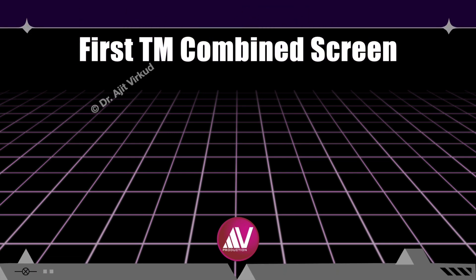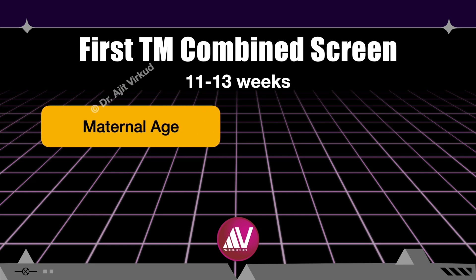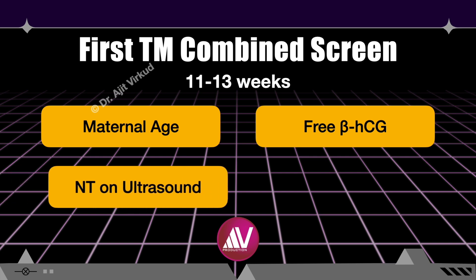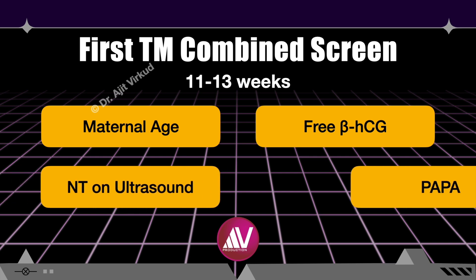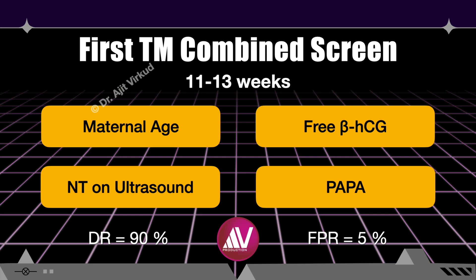There is another test done in the first trimester, between 11 to 13 weeks, called the combined test. Markers measured in this test are maternal age, free beta-hCG, nuchal translucency by ultrasound, and PAPP-A levels. It has a detection rate of around 90 percent, which is pretty high compared to the previous tests, and a false positive rate of five percent. Since it involves measurement of only two biochemical markers, it is also called the dual marker test.